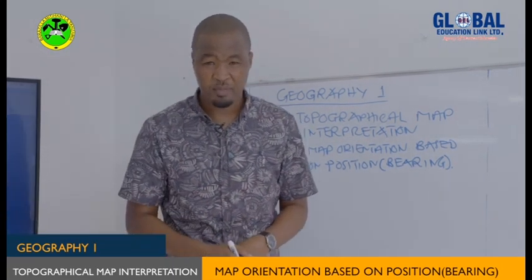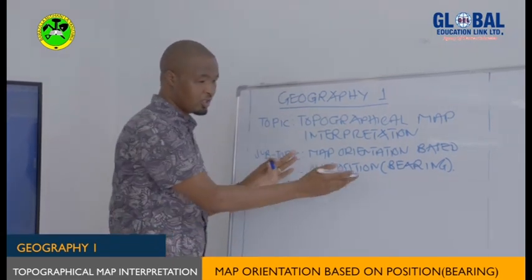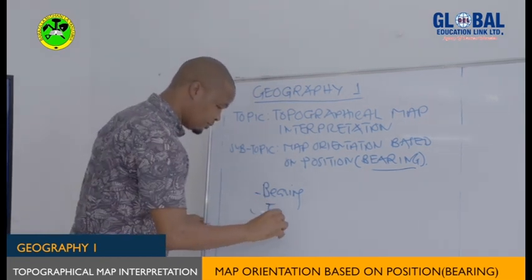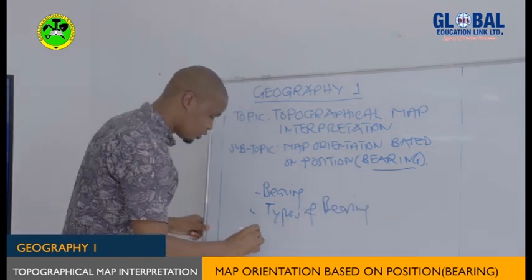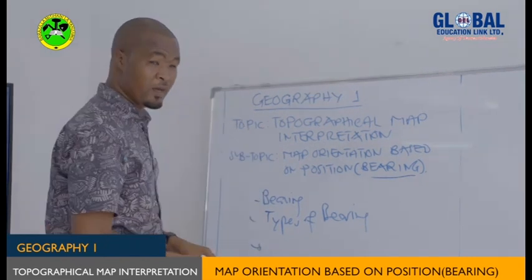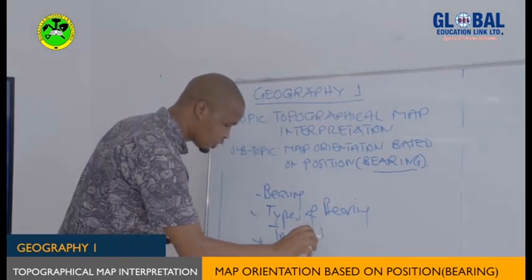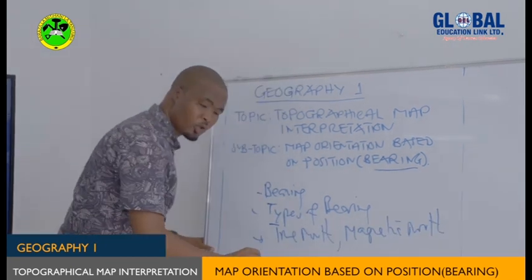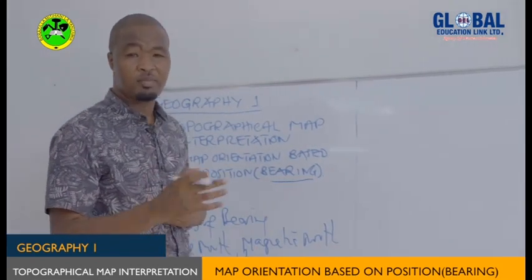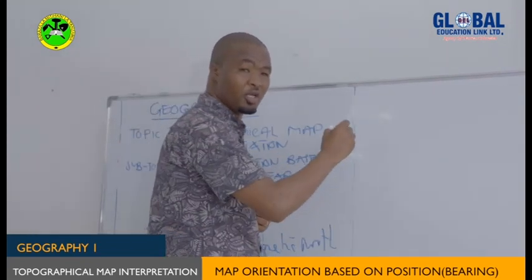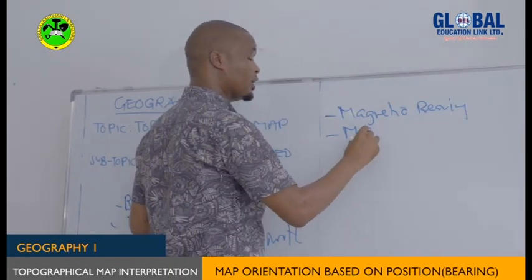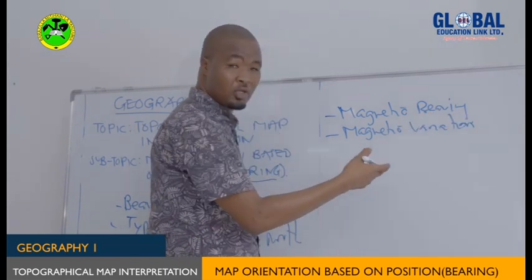So what is bearing? What are the types of bearing? We are going to discuss what is bearing and its types. Then we will see what we call true north, and we will see the types of bearing and some of the calculations involved with bearings. Thereafter we will see the true north, the magnetic north, and the grid north. We will also focus more on what we call the magnetic bearing and magnetic variation — their definitions and how to calculate them, including how to calculate the true bearing.